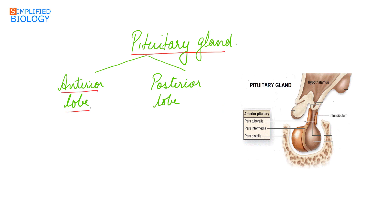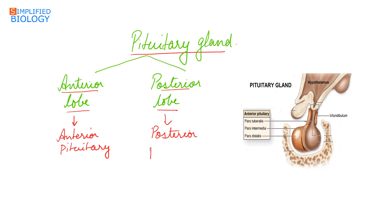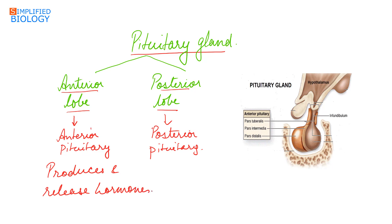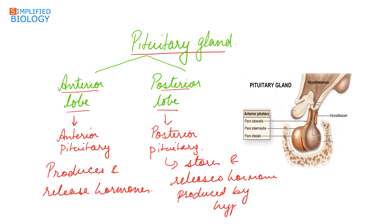The pituitary gland can be divided into two parts: the anterior lobe and the posterior lobe. The anterior lobe forms the anterior pituitary while the posterior lobe forms the posterior pituitary. The anterior lobe produces and releases hormones, while the posterior lobe stores and releases hormones produced by the hypothalamus.